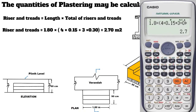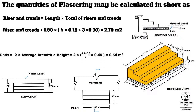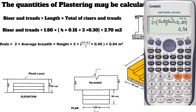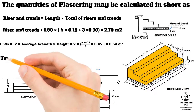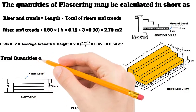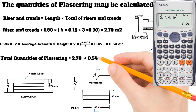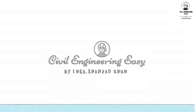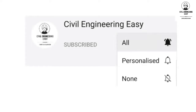For the plastered quantity of ends, multiply 2 by the average width and height, where 2 is for the two ends. Putting in the values: 2 × (0.9 + 0.3) ÷ 2 × 0.45 = 0.54 square meter. The total quantity of plastering is 2.70 + 0.54, equal to 3.24 square meter. Thanks for watching. For more information and interesting topics related to civil engineering, subscribe to my YouTube channel and don't forget to press the bell icon.